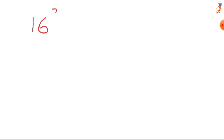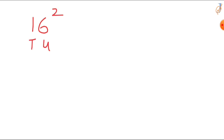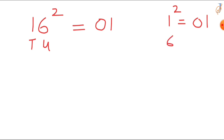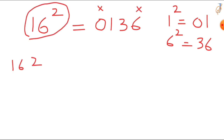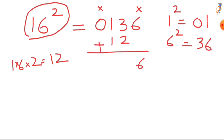First, square numbers. For example, take 16 squared. Here 6 is in the units place and 1 is in the tens place. First, square the tens digit: 1 squared is 1, write it as a double digit — 01. Then square the units digit: 6 squared is 36, write 36. Then skip the first and last digits and multiply the middle numbers: 1 times 6 is 6, 6 times 2 is 12. Write 12 in the middle, then add: 3 plus 2 is 5, 1 plus 1 is 2.